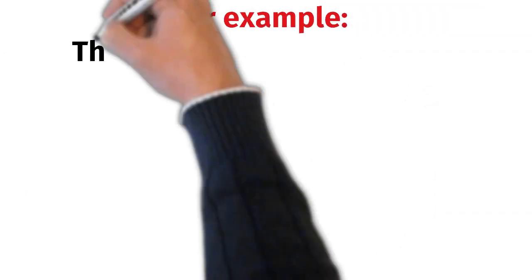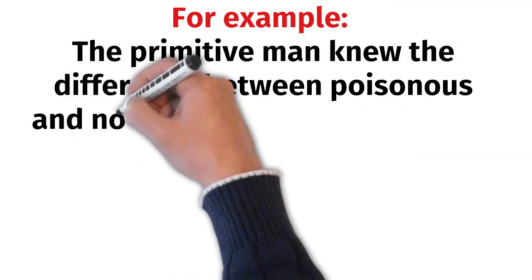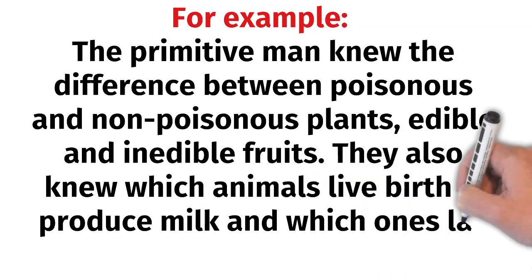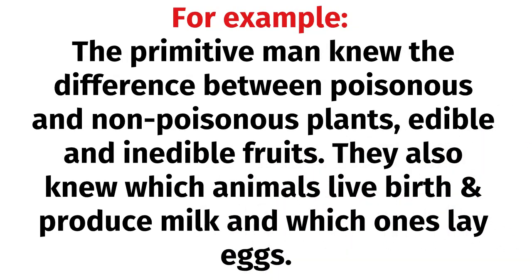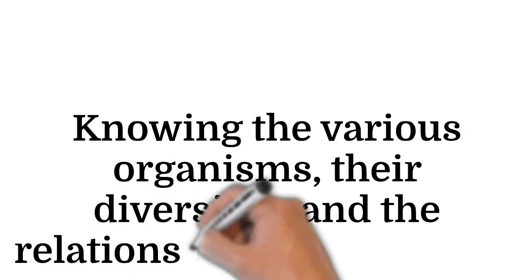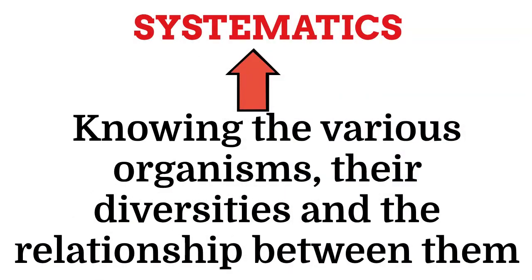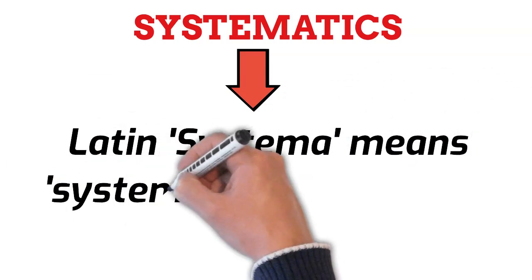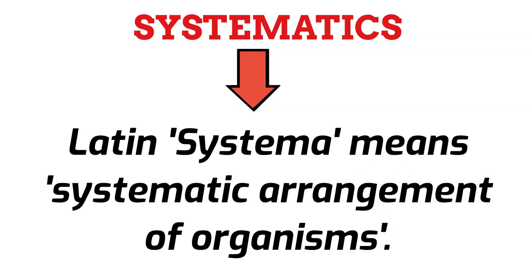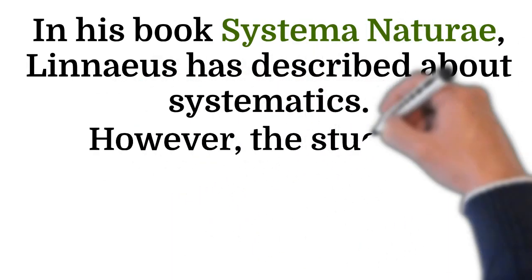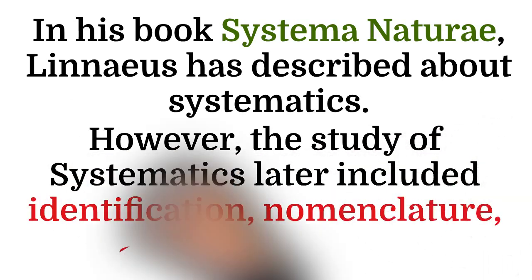For example, the primitive man knew the difference between poisonous and non-poisonous plants, edible and inedible fruits. They also knew which animals give live birth and produce milk, and which ones lay eggs. Since long, human beings have been interested in knowing various organisms, their diversities and relationships between them — this is called systematics. The word 'systematics' is derived from the Latin 'systema', meaning systematic arrangement of organisms. In his book Systema Naturae, Linnaeus described systematics, which later included identification, nomenclature and classification.